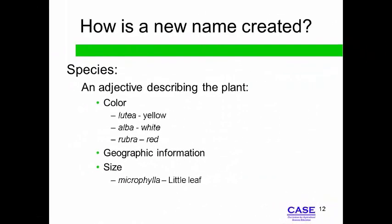A species name is often an adjective that describes the species. For example, a plant named Ceanothus microphylla has a little — micro — leaf — phylla. A species name may also give credit to the discoverer. For example, botanist Thomas Drummond is thought to have discovered the annual phlox species, and the species name became Phlox drummondii.